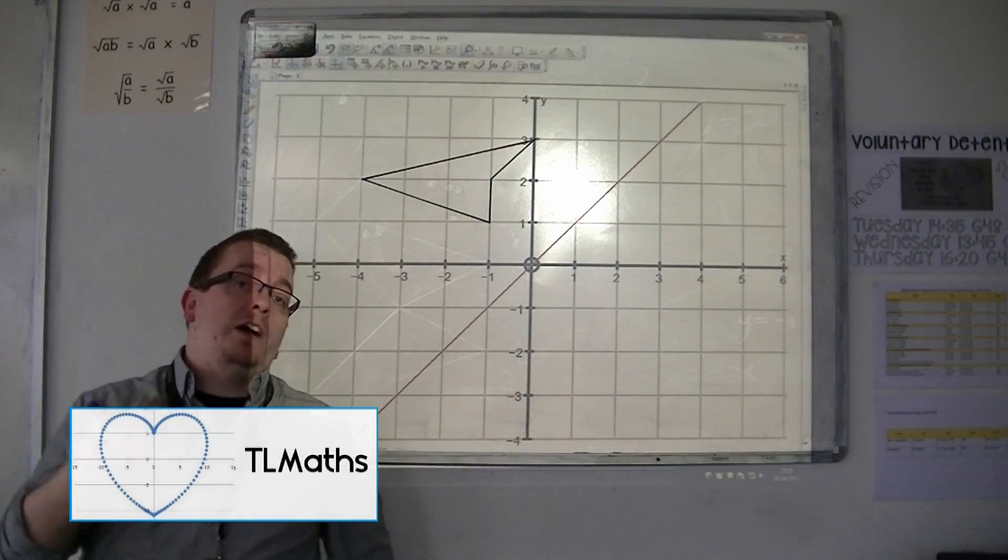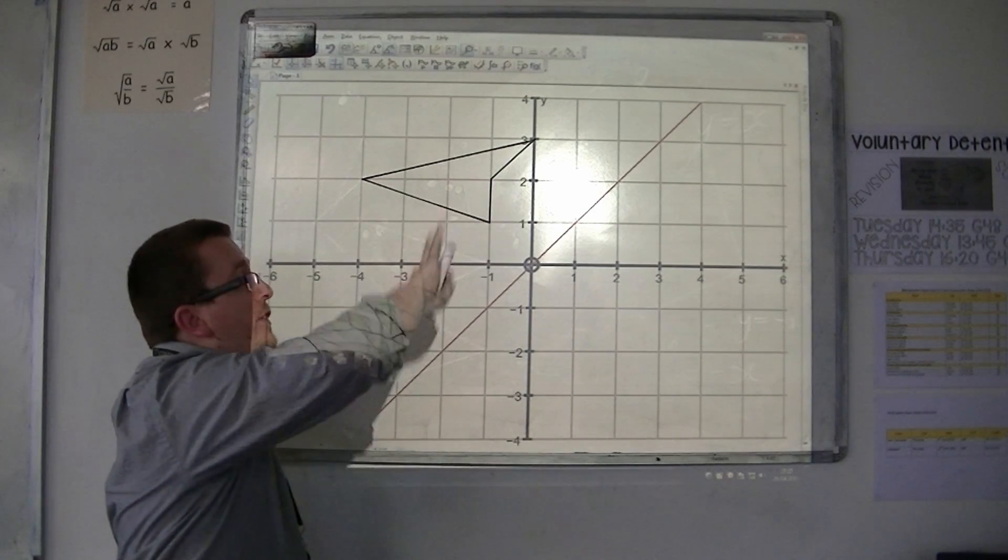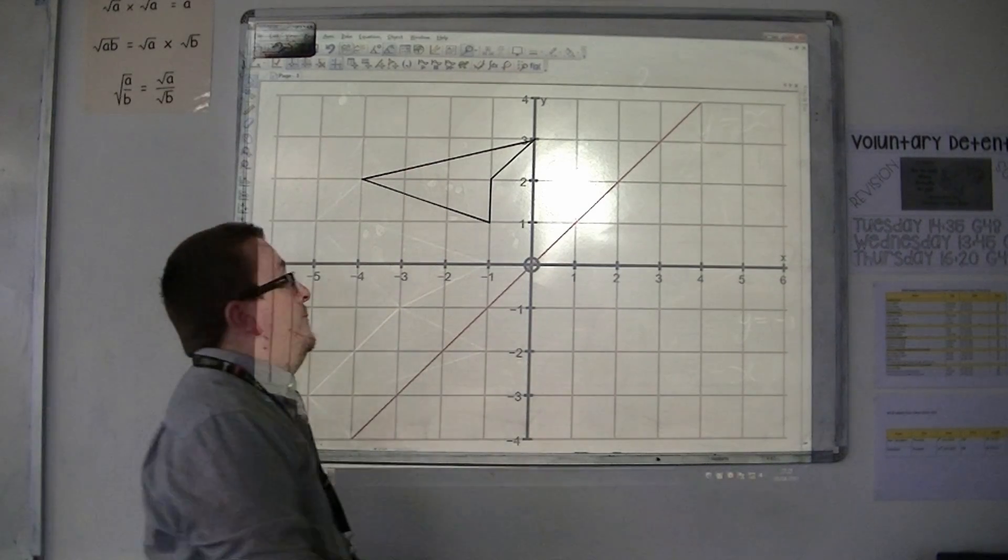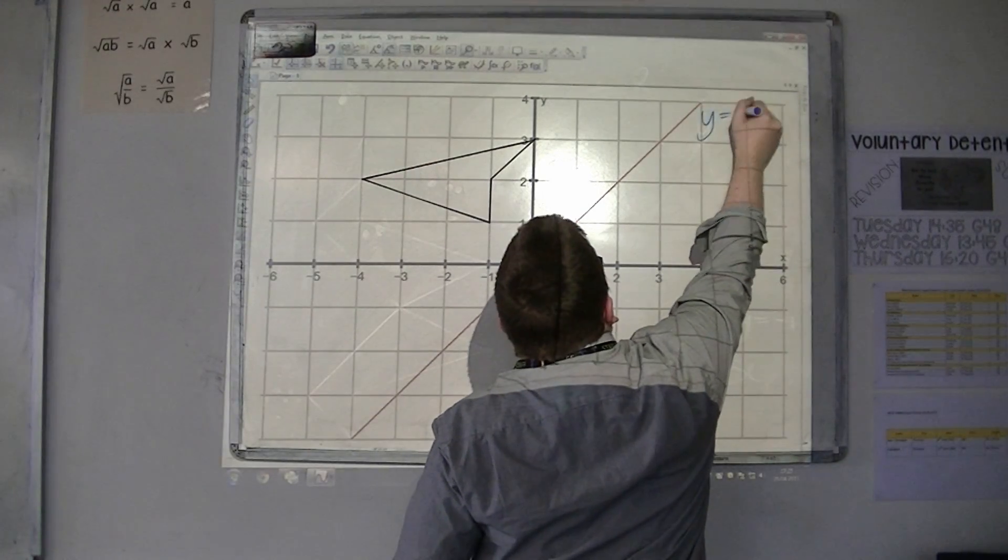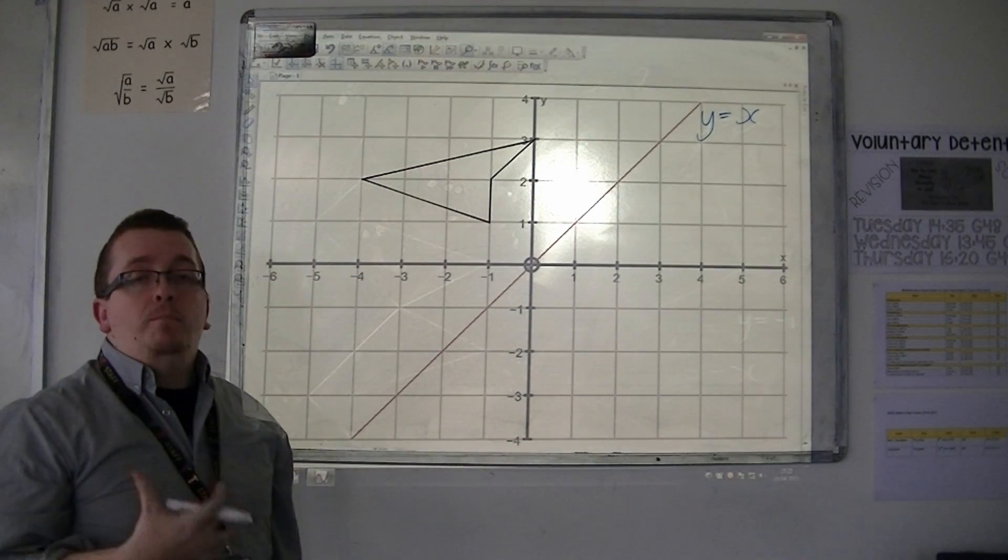In this video, I'm going to show you how we reflect a shape in a diagonal line, and this is the line Y equals X. So we have a shape already pre-drawn. How do we reflect in this as the mirror line?